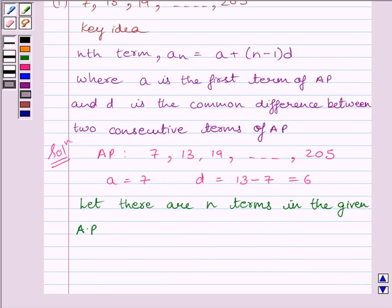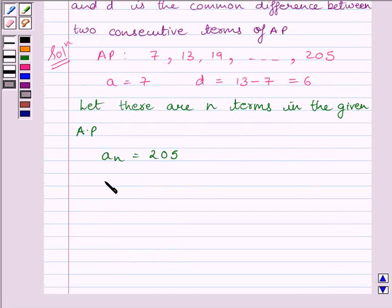Now, let us assume that there are n terms in the given AP. Then, the nth term, that is an, must be equal to 205. So, we know an is given by a plus (n minus 1) multiplied by d.